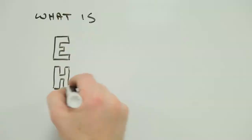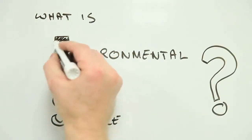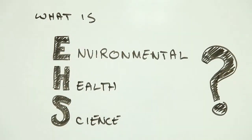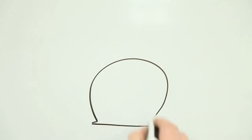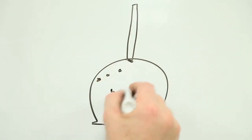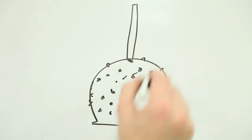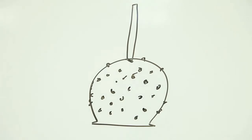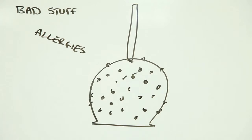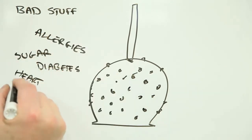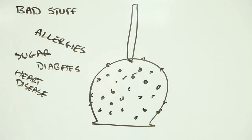What is environmental health science and why is it important? Imagine you have a peanut-coated caramel apple. Now imagine all the ways that apple might cause harm to someone. The peanuts could trigger an allergic reaction. Sugar in the caramel could increase your chances of developing diabetes or heart disease.